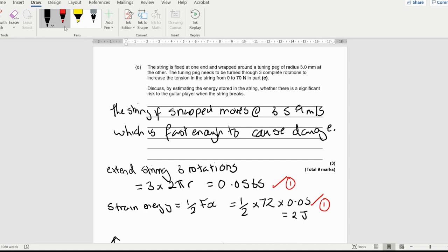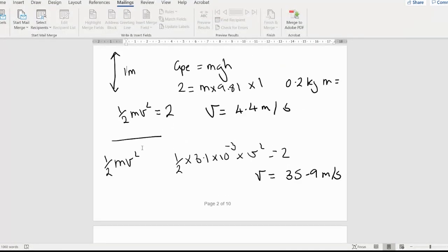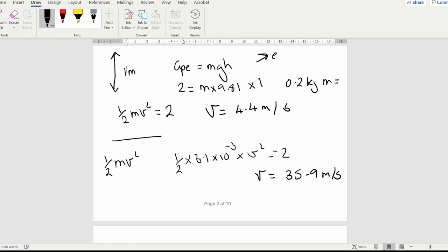This last part here was for the actual discussion part. So this section that says discussion, when you see the word estimating the energy, that means to do some calculations. There are two marks there, and then discuss whether there is a significant risk to the actual person. So I worked out how fast it was going and said yeah, that's going to be moving pretty fast and it's going to cause some damage if you get hit. This is an example of using mgh or using the mass of the string.